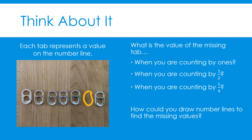When counting by one-fourth, the value of each tab changes again. Let's count by fourths: one-fourth, two-fourths, three-fourths, four-fourths or one whole, five-fourths, six-fourths. Six-fourths is an improper fraction to represent the missing tab. You can also represent it as a mixed number, which would be one and two-fourths or one and one-half — those are equivalent fractions. You could have also drawn number lines to show your skip counting to help determine the missing values, either digitally or on paper.